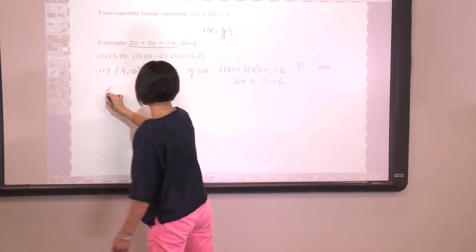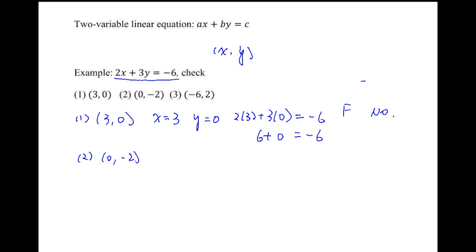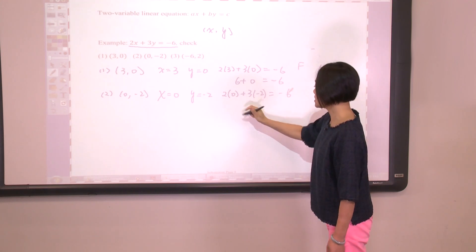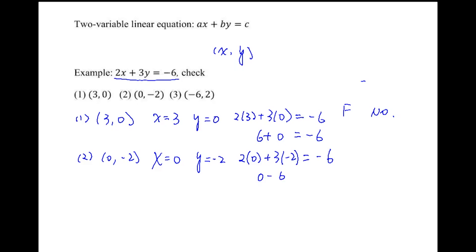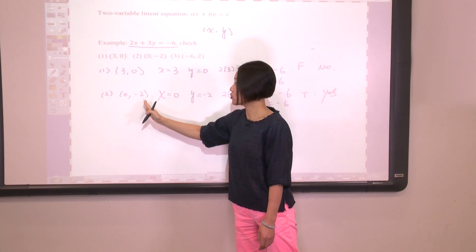Let's try the second one, (0, negative 2). This implies x equals 0 and y equals negative 2. Plugging in, the left-hand side is 2 times 0 plus 3 times negative 2, which gives 0 minus 6 equals negative 6. That is true, so (0, negative 2) is a solution of this equation.